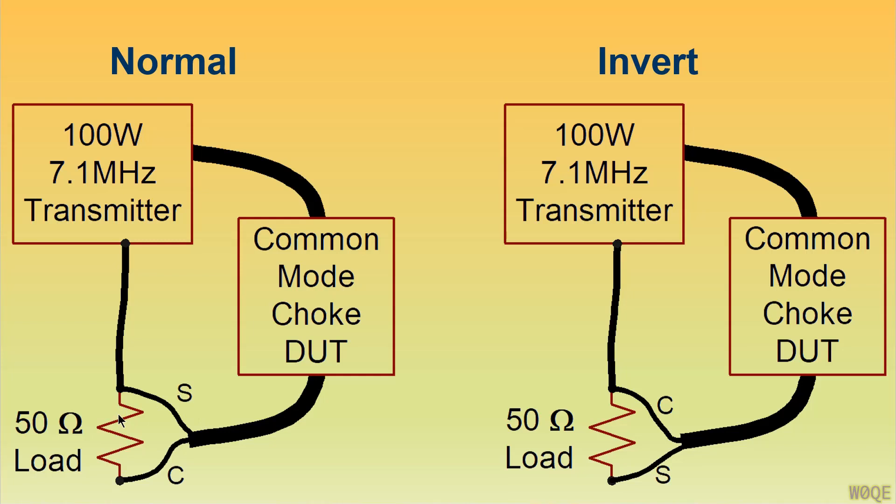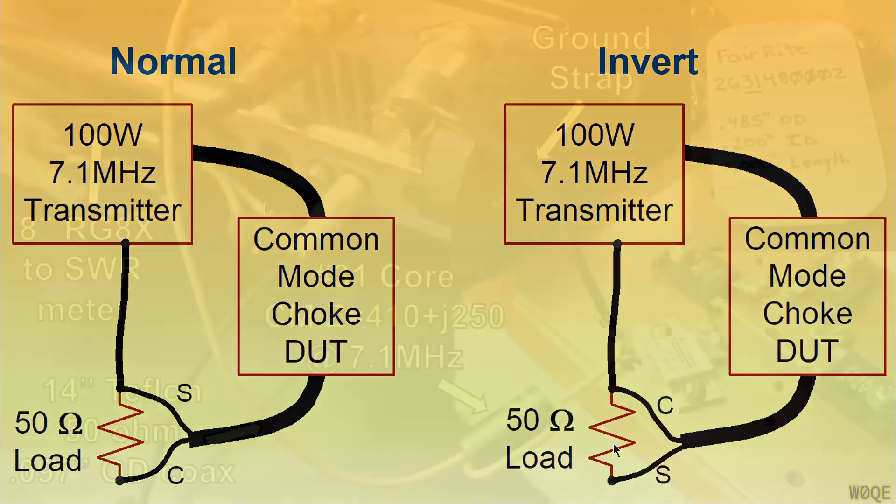We're going to put a 50 ohm dummy load on the end of it. We're going to allow the dummy load to be connected either side of it, either the shield side back to the transmitter chassis, or the side where the center conductor connects back to the chassis. So you need to be able to get access to both these points.